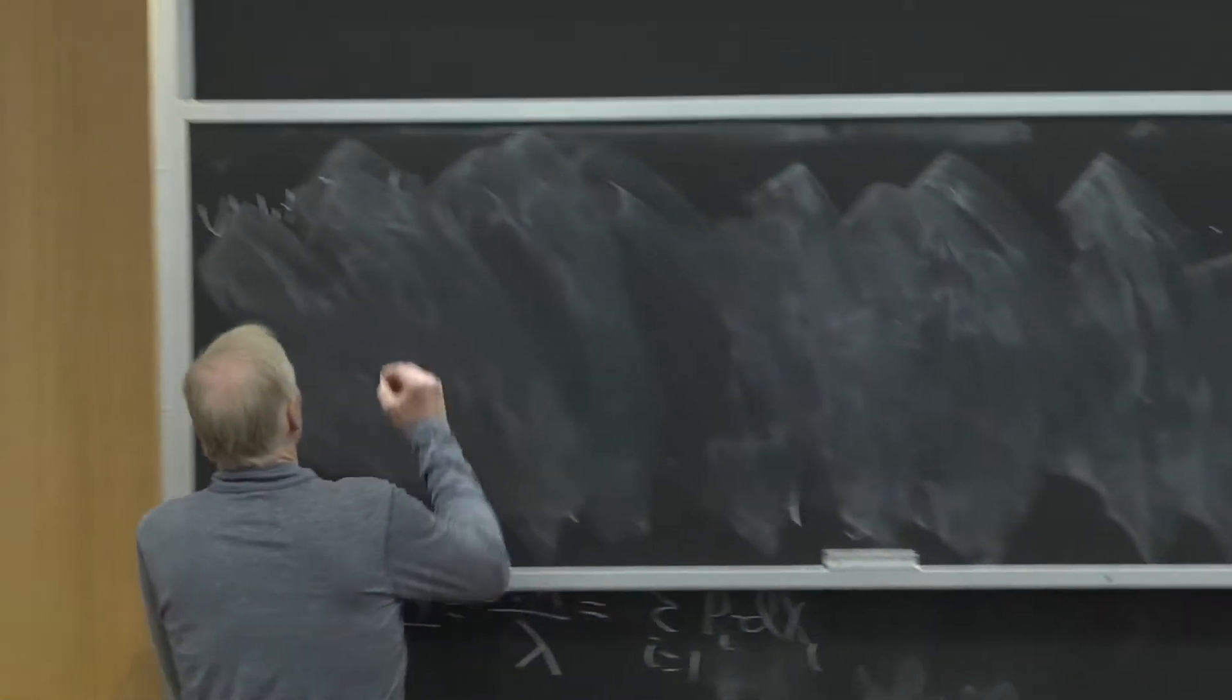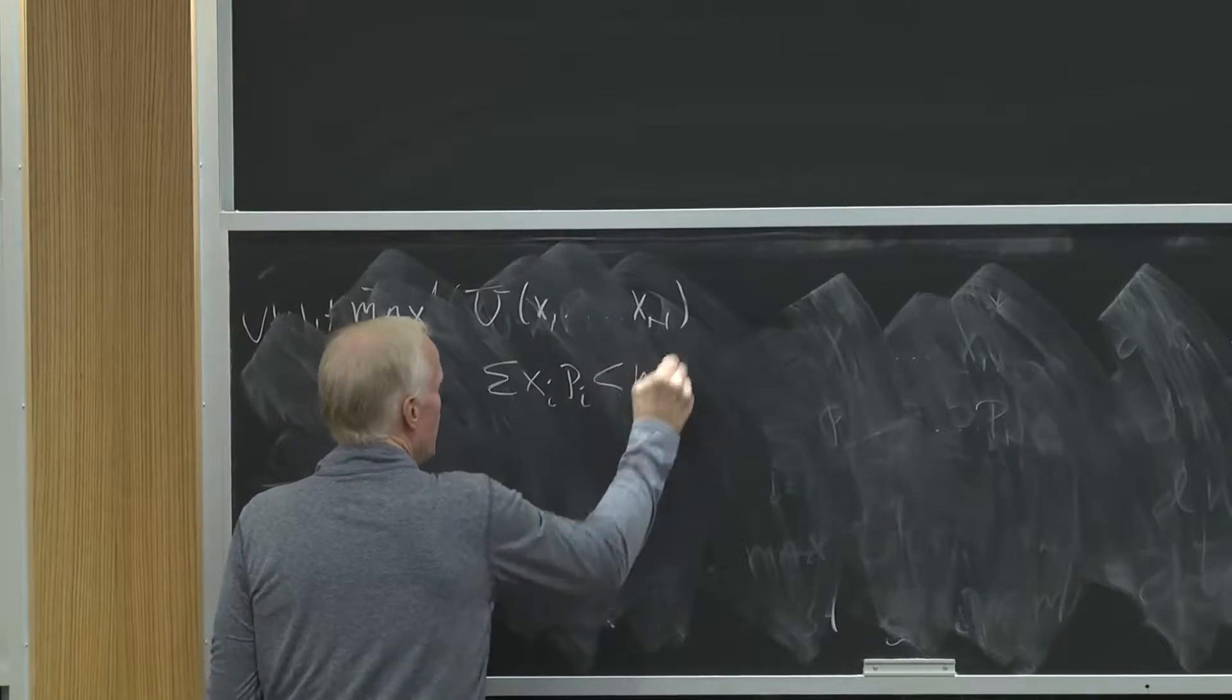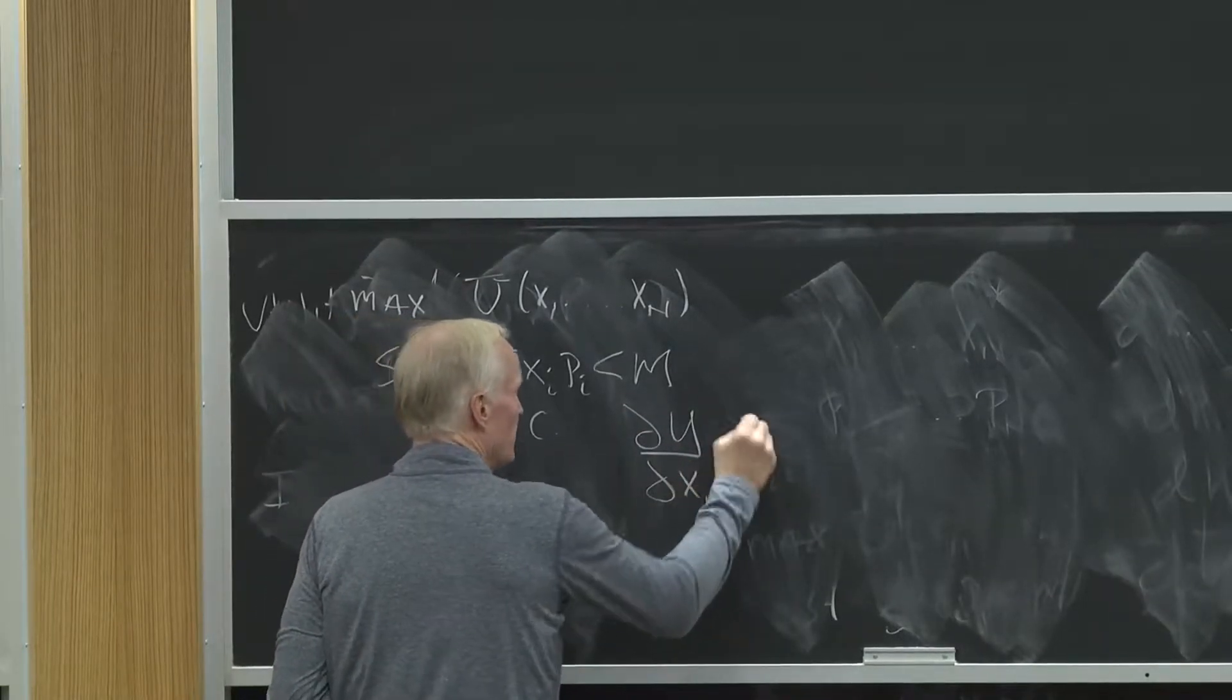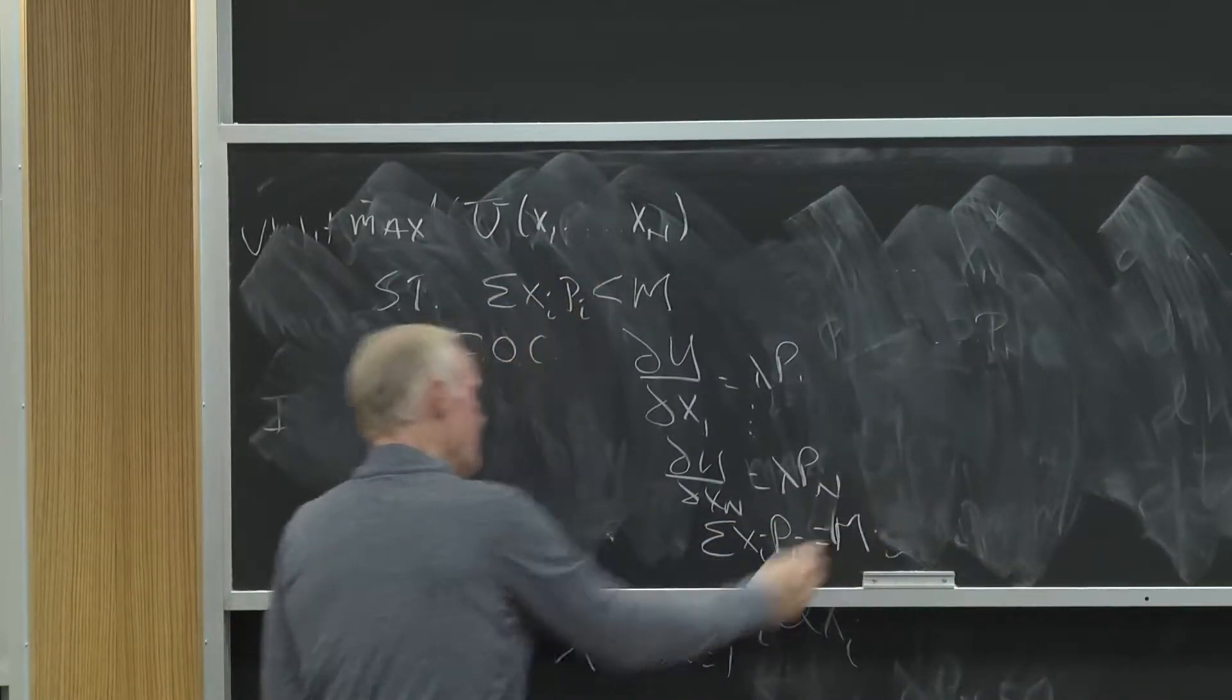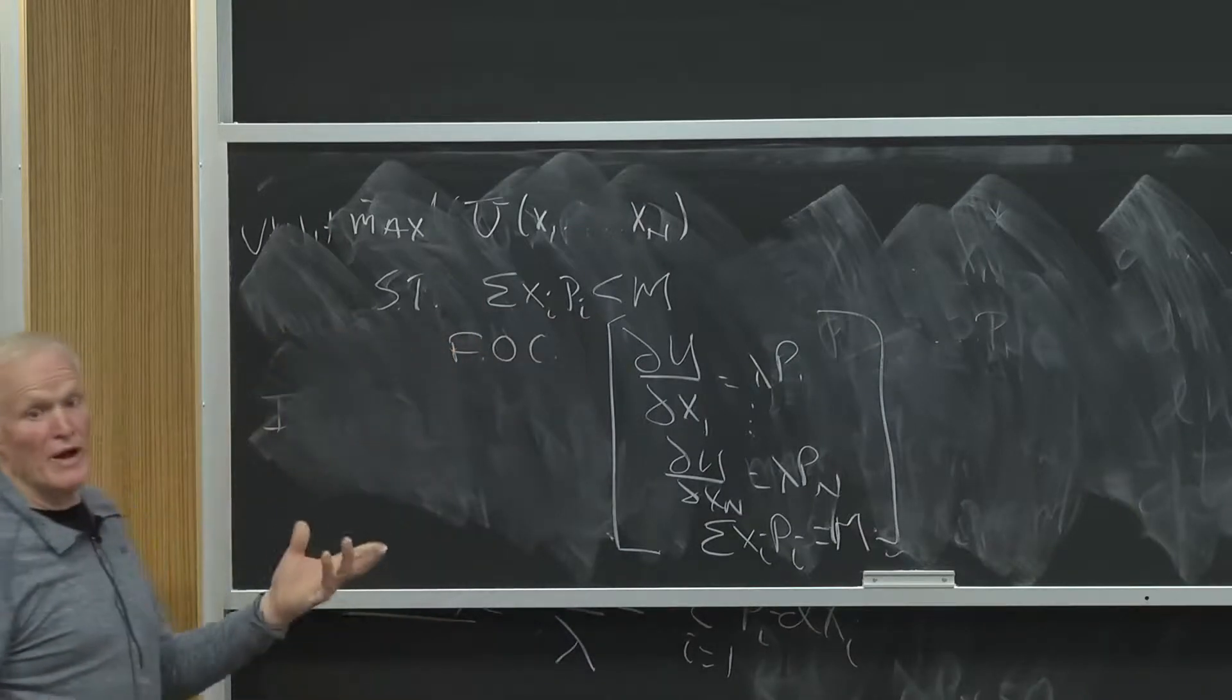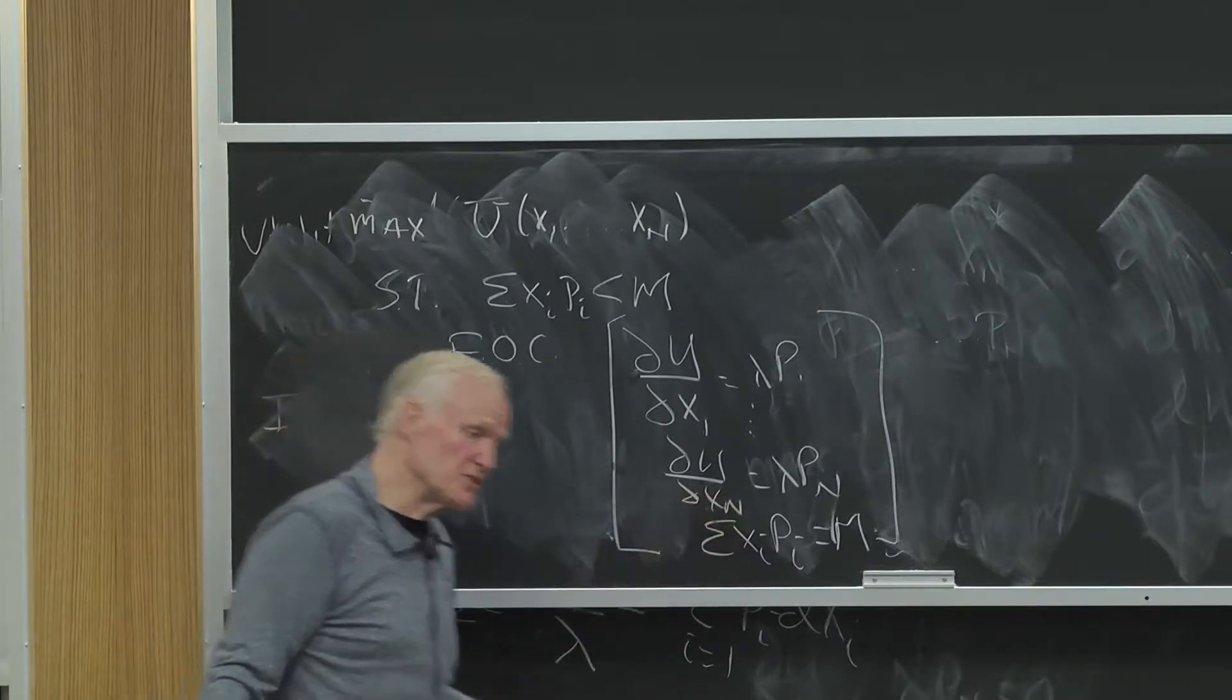If I start with maximizing u(x1,...,xn) subject to the sum of xi*pi less than or equal to m, I get my first order conditions that I just put on the board: partial u/partial x1 equals lambda*p1, down to partial u/partial xn equals lambda*pn, and the sum of xi*pi less than or equal to m. Those are my n+1 equations in n+1 unknowns. The n+1 equations are the proportionality between prices and marginal utilities and the budget constraint. The budget constraint is going to play a major role here, and I'll come back to that a little later.